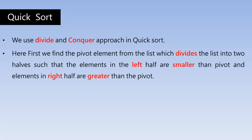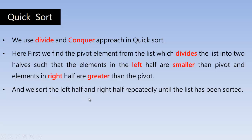Quicksort follows the divide and conquer approach. Here we first find the pivot element from the list, which divides the list into two halves such that elements in the left half are smaller than the pivot and elements on the right are greater than the pivot. We sort the left half and right half repeatedly using the same process until the list has been completely sorted.